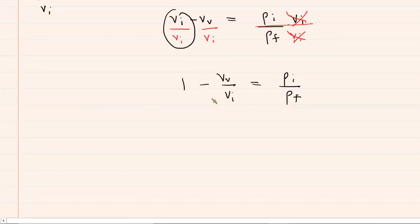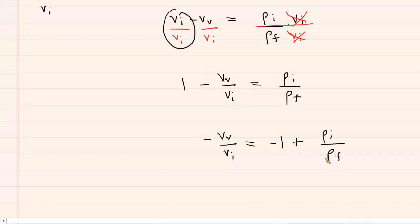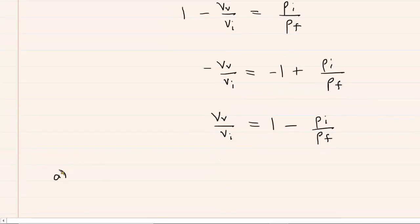We're now just a couple of steps away. Subtracting 1 from both sides and then dividing each term by negative 1 flips the signs, giving us the ratio we seek: V sub V over V sub I equals 1 minus the density of the iceberg divided by the density of the fluid.